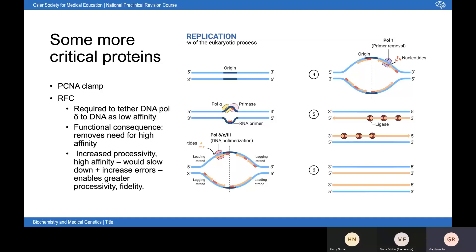There are some more critical proteins involved in this process. PCNA (proliferating cell nuclear antigen clamp) requires ATP hydrolysis. Replication factor C (RFC) is required to tether DNA pol-delta to the DNA, as there is low affinity between pol-delta and the DNA strand itself. This removes the need for DNA pol-delta to have high affinity for DNA, which would slow down replication and increase the error rate. This enables greater processivity, fidelity, and speed — something you should include when describing the process in an essay.